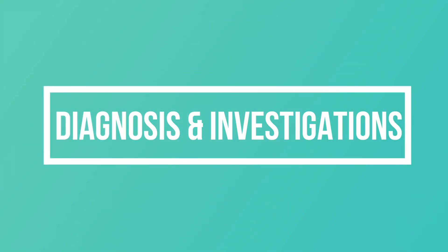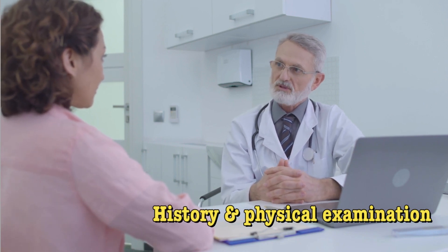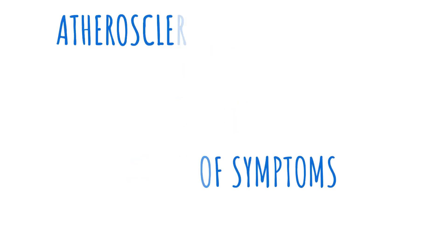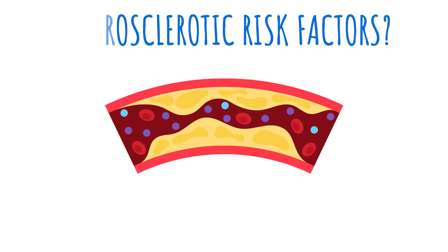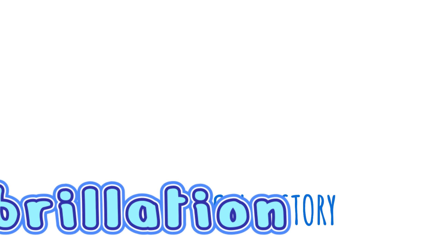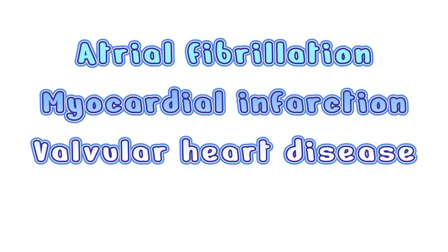The workup for a TIA begins with history and physical examination. Take a detailed history from the patient or if possible from a witness. We need to know about the onset, course, duration of symptoms and if they have any atherosclerotic risk factors and relevant medical history like atrial fibrillation, myocardial infarction or valvular heart disease.